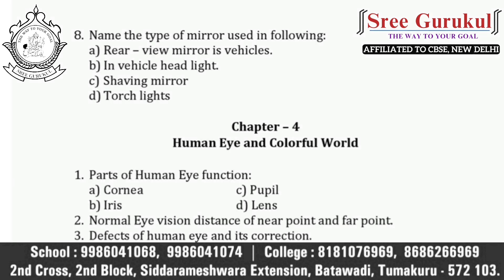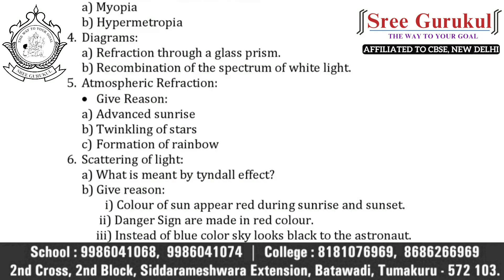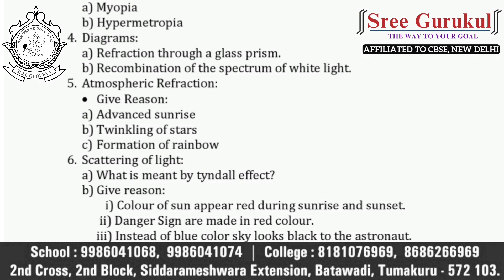Let's move on to the next chapter: human eye and the colorful world. In this chapter, you have to learn the functions of parts of the human eye — cornea, iris, pupil, and lens. You can expect any one question among these. Next: normal eye vision, distance of near point and far point. The major concept in this chapter is defects of human eye and its correction — myopia or hypermetropia — and any one question you can expect in your board exam 100%.